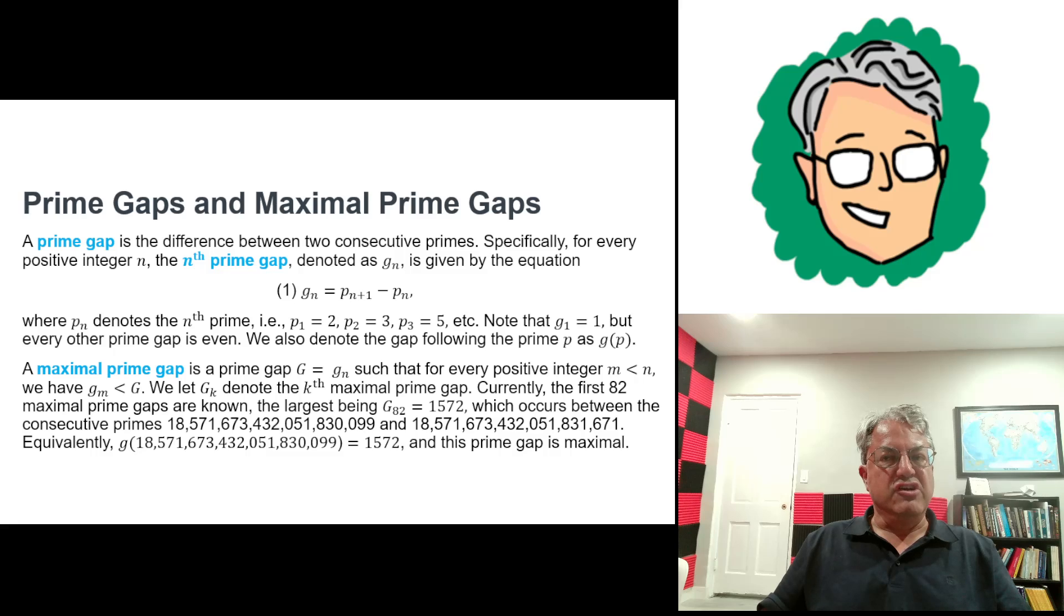These are prime gaps. I'm calling them capital G here. So we say capital G is a maximal prime gap if it's equal to a prime gap little g sub n such that little g sub m is less than little g sub n for all m less than n. And that just means that there's no prime gap as large or larger than capital G for any primes less than Pn. So it's the biggest one you have so far. And I can give you a few examples of those.